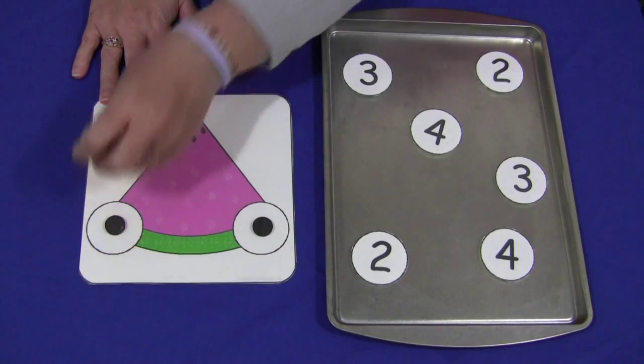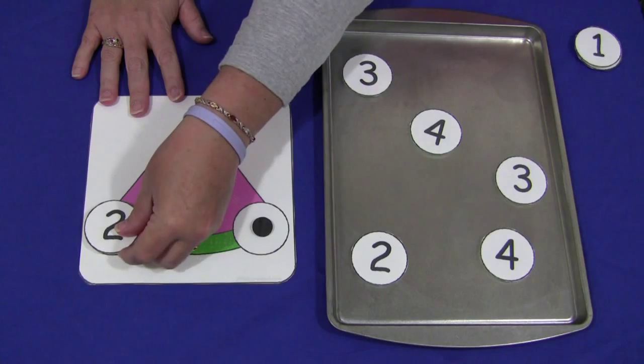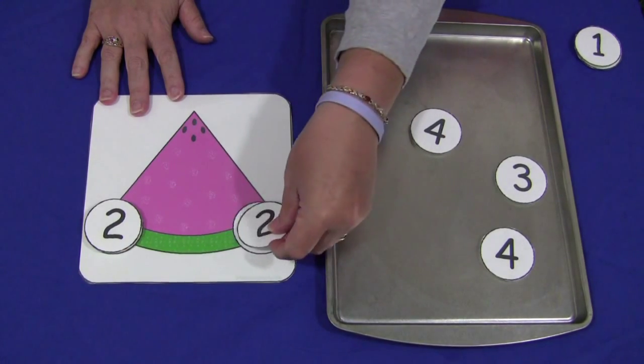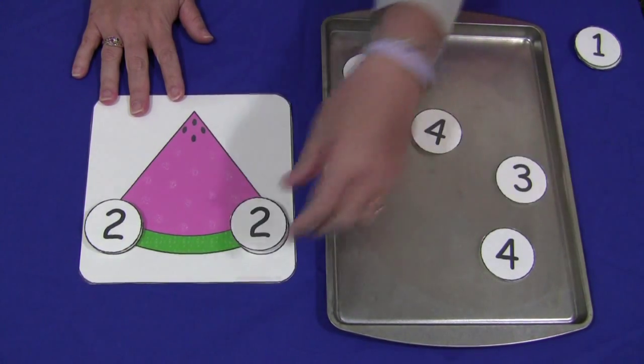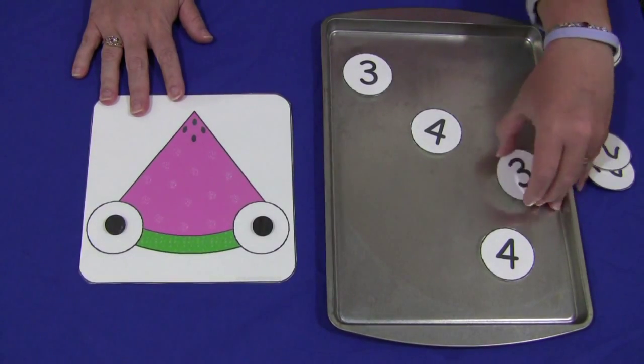Then they would just take those off and put them somewhere else and then find another number, find the matching number, take them off and they would just keep doing that for whatever numbers that they wanted to do.